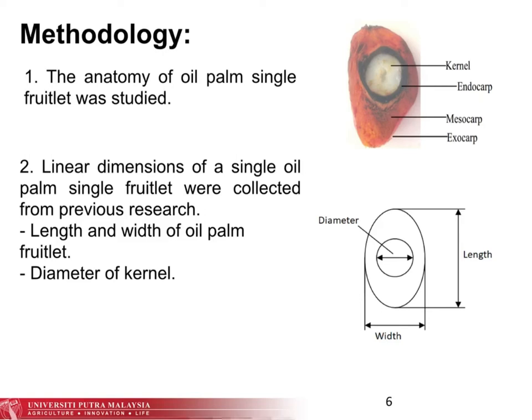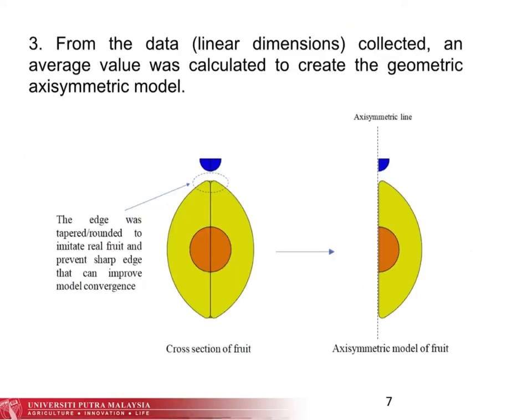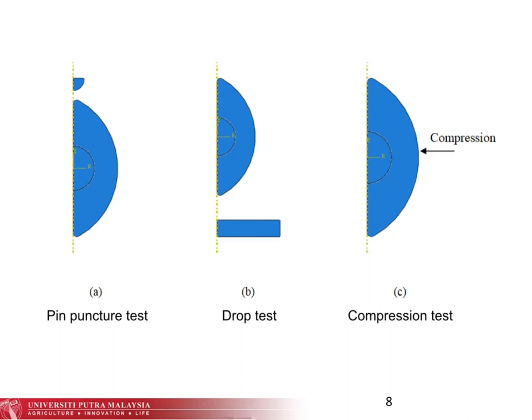The dimensions required are the length and width of the fruitlet and the diameter of the kernel. From the data collected, an average value was calculated to create a geometric axisymmetric model. The axisymmetric model was used in this study because it can reduce convergence error and thus result in a more accurate result. The model created was used to carry out pin puncture test, drop test, and compression test.